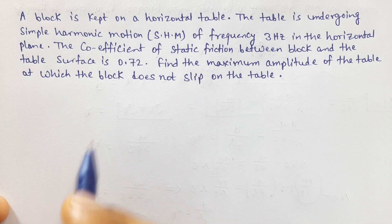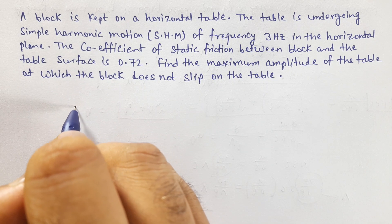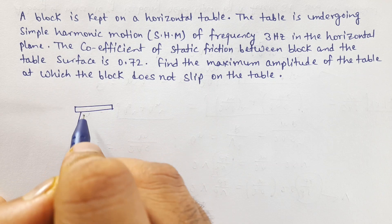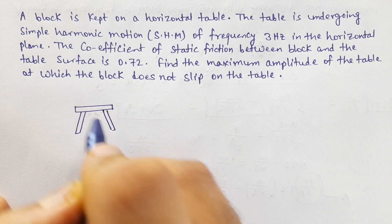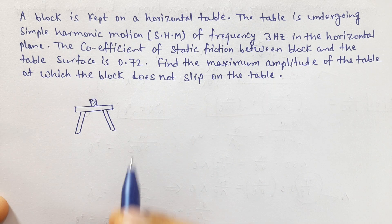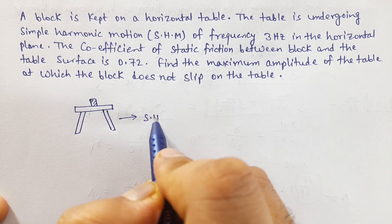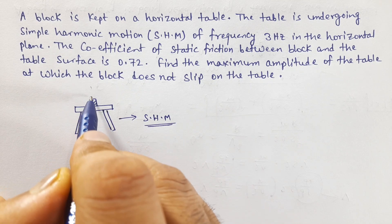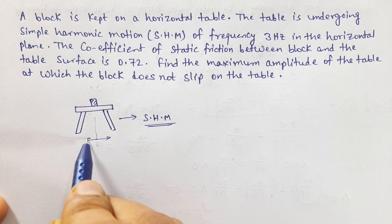We have a block on a horizontal table. The table is in simple harmonic motion, so it will oscillate.